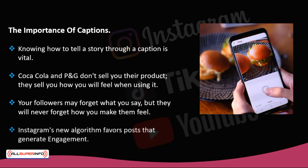Instagram's new algorithm favors posts that generate engagement, and therefore a post that receives a lot of likes and comments will be more likely to reach a larger audience than a post that doesn't call for your followers to participate. Forrester Research claims that Instagram is the king of social interaction. The most influential brands are registering high rates of engagement — they get a 2-3% interaction for every follower, exceeding the engagement generated by the same brands on both Facebook and Twitter.